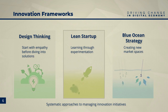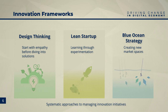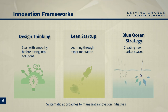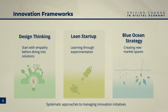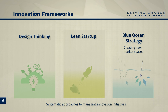Lean startup methodology creates a minimal viable product — short MVP — to quickly validate assumptions and gather user feedback. Then you try again or pivot. The idea is that the fast process helps you cut waste and deliver dynamic results. The Blue Ocean Strategy is about creating new market spaces by reinventing industry boundaries, shifting focus from competition to innovation.